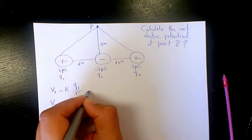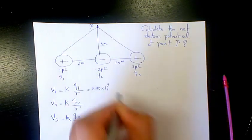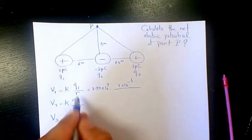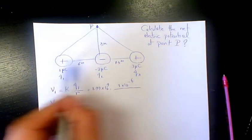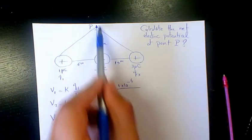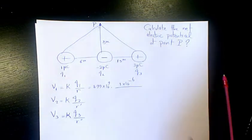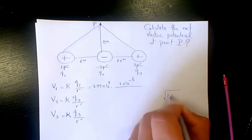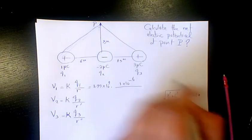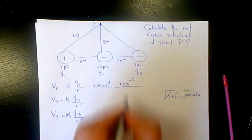So the first one is going to be 8.99 times 10 to the power of 9, times Q1 which is 1 times 10 to the power of negative 6, divided by R. R is going to be based on the Pythagorean theorem. The square root of 8 squared plus 6 squared equals the square root of 100, which is 10. So this part is 10 divided by 10.